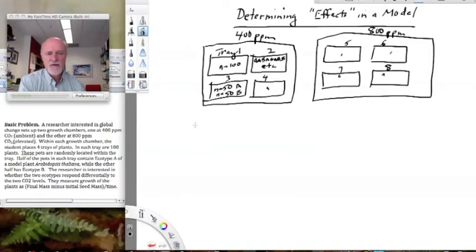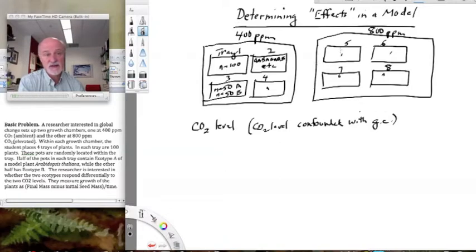First of all, let's go ahead and figure out the statistical layout. So what are our factors here? We have our CO2 level, which is being manipulated in the two growth chambers. And by the way, we just have one growth chamber at each CO2 level, don't we? So notice that CO2 level is confounded with growth chamber. So that's unfortunate with our experimental design, because we would have to assume that all the other differences between growth chambers don't matter and that we can attribute our differences in mean growth between the two chambers to CO2. And in fact, maybe that's not the case.